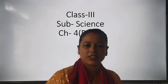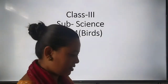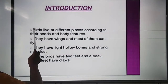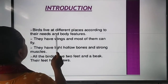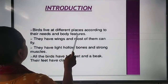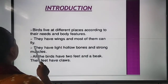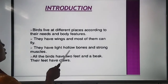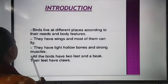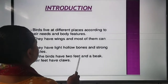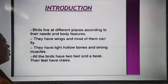Class 3, let's continue Chapter 4 - Birds. Birds live at different places according to their needs and body features. They have wings and most of them can fly. They have light hollow bones and strong muscles. All birds have two feet and a beak, and their feet have claws.